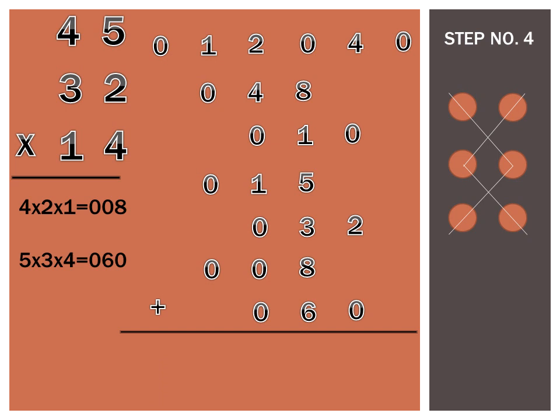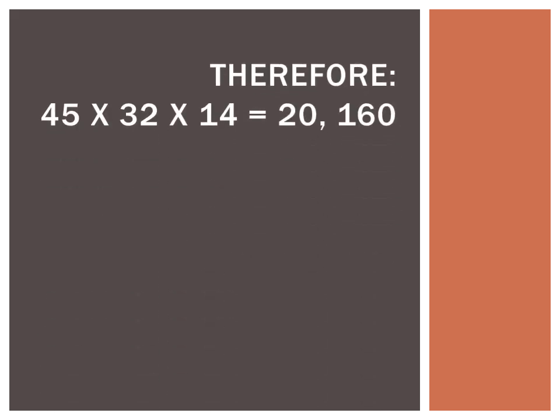And then lastly, by adding all the addends in the vertical position, finally we will have now the answer for 45 times 32 times 14. For our final answer we have 0, 2, 0, 1, 6, 0, or we can read it as 20,160. Therefore, 45 times 32 times 14 equals 20,160.